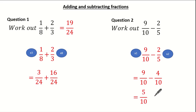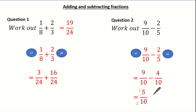This is not in its simplest form, so now let's cancel down. What's the highest common factor of 5 and 10? It's 5. So dividing the numerator by 5 gives me 1 and dividing the denominator by 5 gives me 2. So my final answer is 1 half.